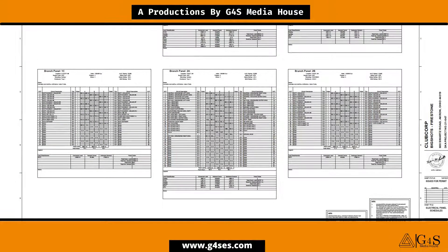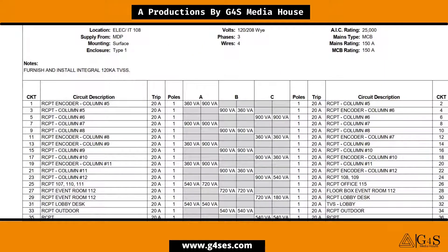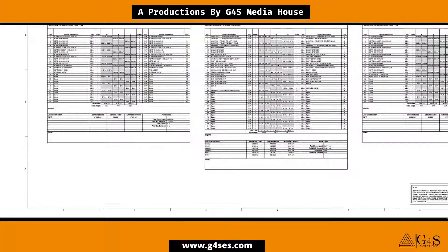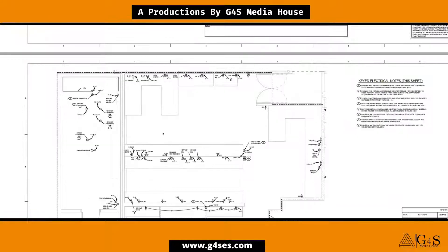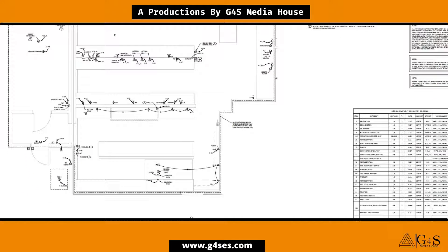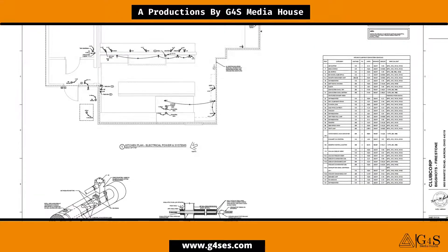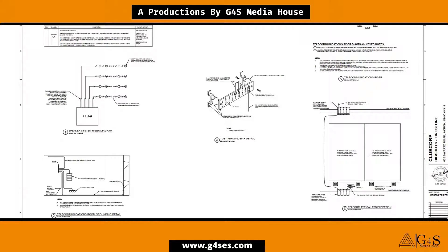For example, if we move to the schedule of panel 1C, circuit number 1 shows receptacles in column number 5. Then we move to the next drawing, which is also about the schedules of panel boards. Then there are some enlarged plans — these are areas which can't be shown on the main plan drawings, so they are cut from the main plan and shown on a different drawing. Then there are further detailed drawings.